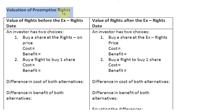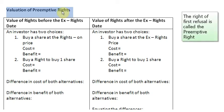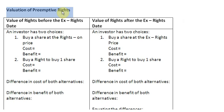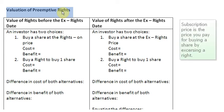First, the thing we need to remember is that in a rights issue, the right of first refusal is given to existing shareholders so that they can maintain their proportional ownership in the company. The second thing is that a preemptive right allows you to buy new shares at a price which is better than the going market price, and that price is known as the subscription price.